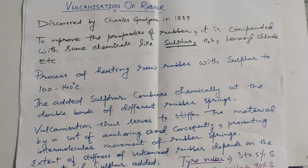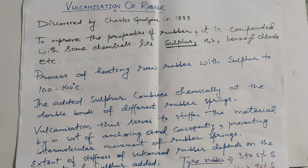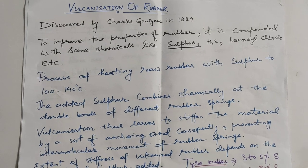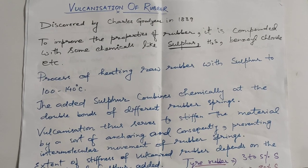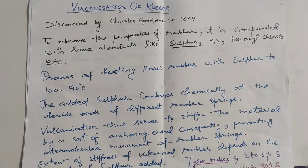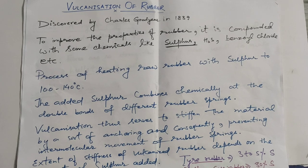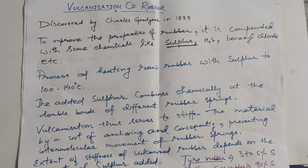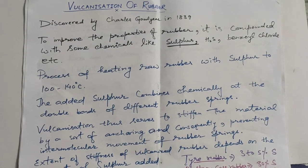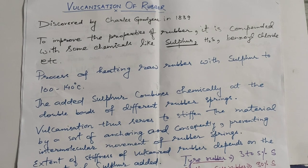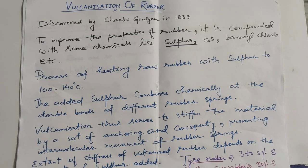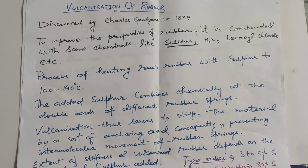To convert normal rubber into a stronger material, the process called vulcanization of rubber is used. It was discovered by Charles Goodyear in the year 1839. To improve the properties of rubber, it is mixed with chemicals like sulfur, hydrogen sulfide, benzoyl chloride, etc. Vulcanization consists of heating raw rubber with sulfur to 100–140°C. The added sulfur combines chemically at the double bonds of different rubber chains.